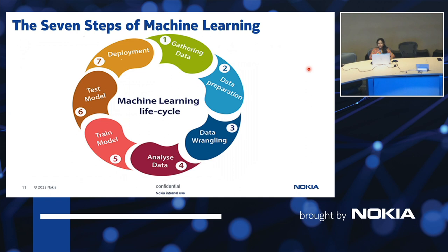What are the steps involved in machine learning? The first step is always gathering the data — we need appropriate data to process. Then we prepare the data: cleaning up unwanted data. The next step is data wrangling, where raw data is structured or transformed into a format the machine can understand. Then we analyze the data after the cleanup and transformation.